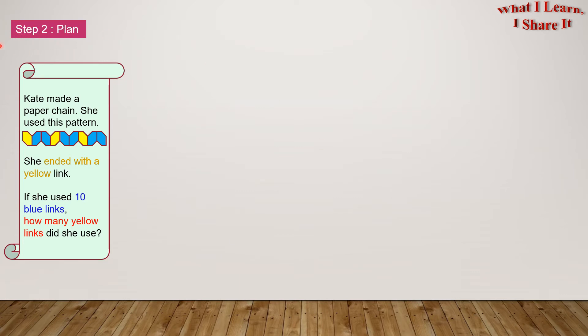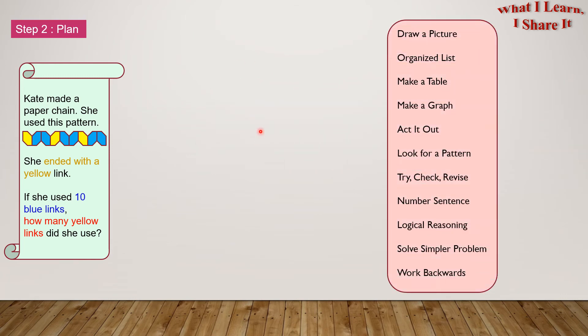Step two: Plan. Now let's think about the strategies. So here are all the strategies. There's draw a picture, organize list, make a table, make a graph, act it out, look for a pattern, try check revise, number sentence, logical reasoning, solve simpler problem, and work backwards. I'm going to use look for a pattern and make a table.